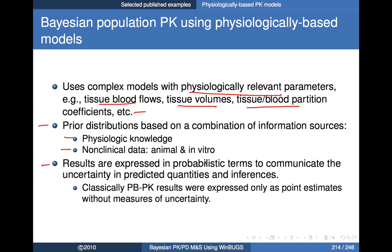We can then analyze new data as it's accrued, and the results are expressed in probabilistic terms — our posterior distributions — that communicate the uncertainty in our predicted quantities and inferences, as well as the model parameters. This contrasts with the classic PBPK approach where results would be expressed only as point estimates without measures of uncertainty. Now we have measures of uncertainty more readily translated into inferences about degree of exposure and degree of risk.